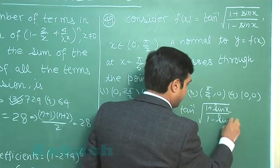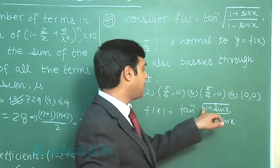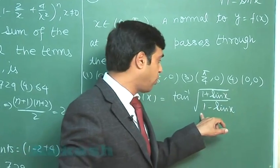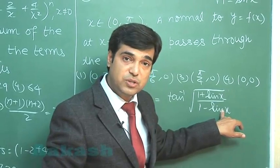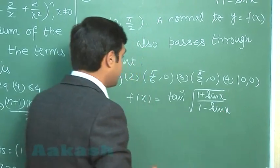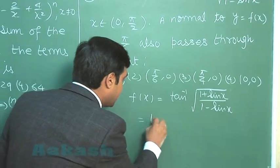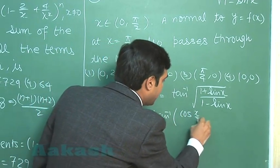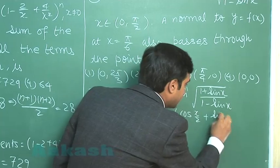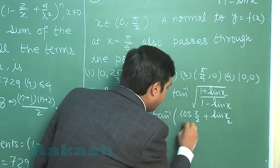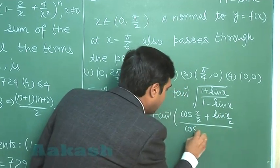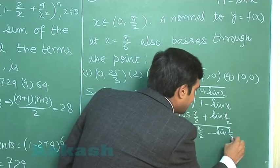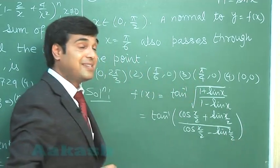We can rewrite the expression under the root as (cos(x/2) + sin(x/2))² upon (cos(x/2) - sin(x/2))². So the expression simplifies to tan inverse of (cos(x/2) + sin(x/2)) upon (cos(x/2) - sin(x/2)).